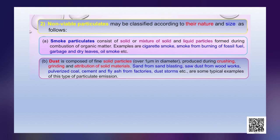Dust is composed of fine solid particles over 1 micrometer in diameter, produced during the crushing, grinding and attrition of solid materials. Sand from sand blasting, sawdust from woodworks, pulverized coal, cement and fly ash from factories, and dust storms are typical examples of this kind of particulate emission.